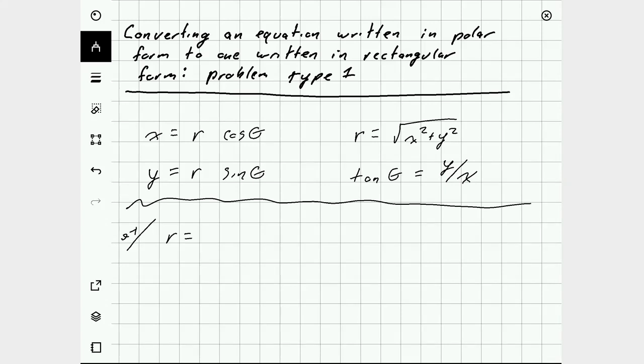For example, r is equal to 2. And I want to take this equation written in polar form and write it as an equation in rectangular form. In order to do that, I look for the easiest place to substitute in an r and get out x's and y's and no r's or thetas.